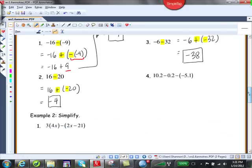All right. Number 4. Now actually, if you think about it, 10.2 minus 0.2, we can just do that regularly. You know how to do that regular subtraction. So do you see? That's going to be 10.0 and then we'll do plus the opposite of negative 5.1.